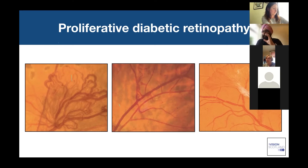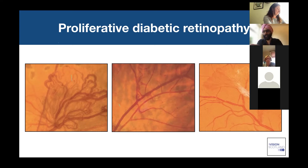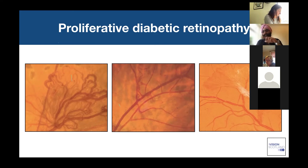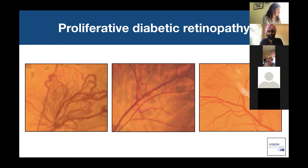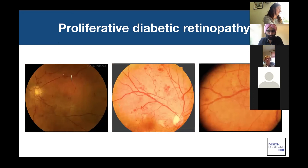It goes back to the point of always having a system during fundal examination. I personally examine the disc, the arcades, the peripheral retina, and then the macula. As you follow the vessels out into the periphery, constantly ask yourself: can I see any evidence of new vessel formation? It's a red flag — it needs to be referred ASAP to the hospital service.